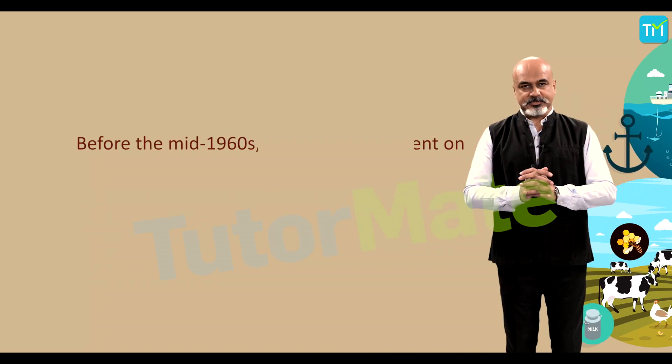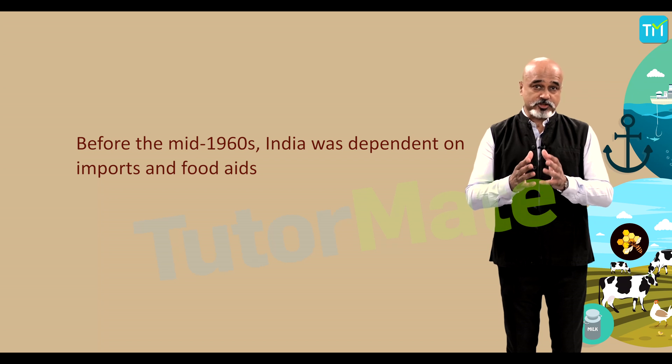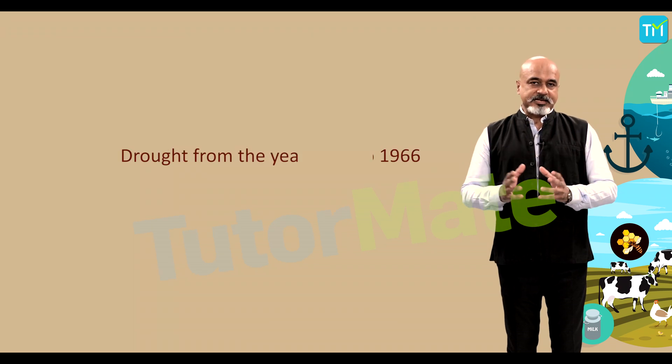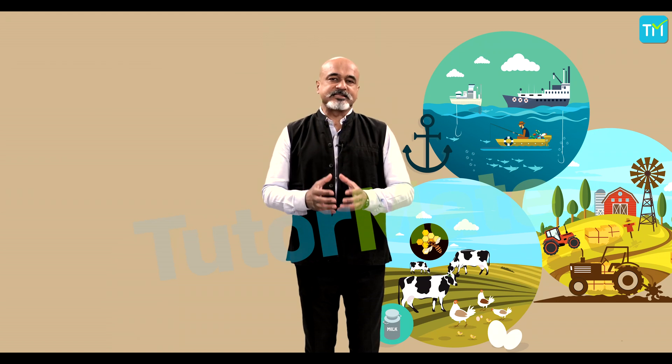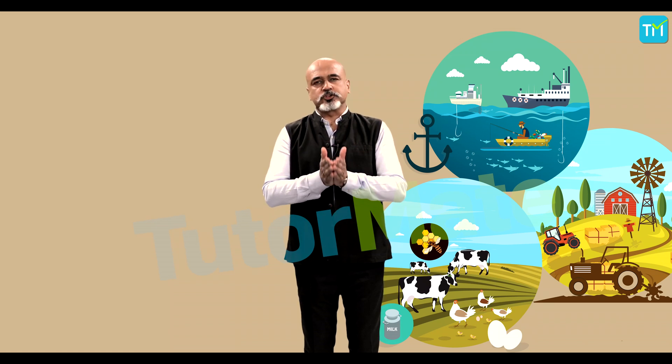India was not always this productive. Before the mid-1960s, India was dependent on imports and food aid from other nations. After facing two years of severe drought from 1965 to 1966, it became clear that India needed to reform its agricultural policy, as it could not rely on foreign aid for food security.